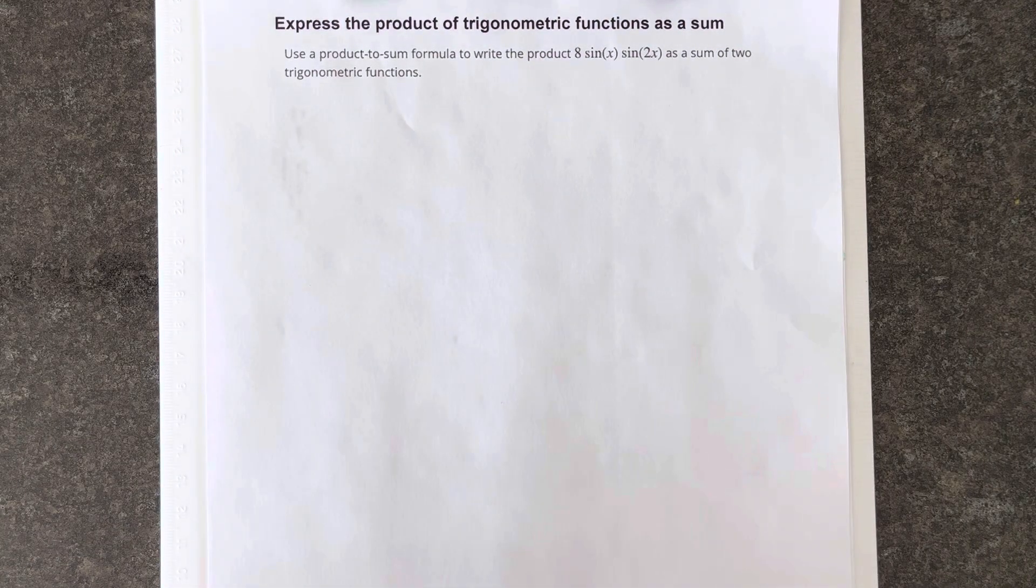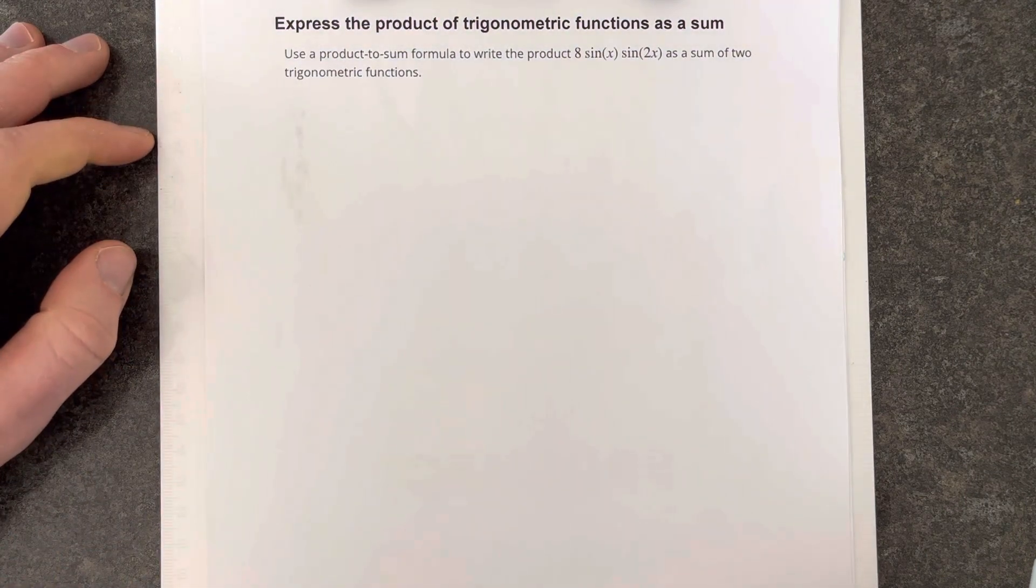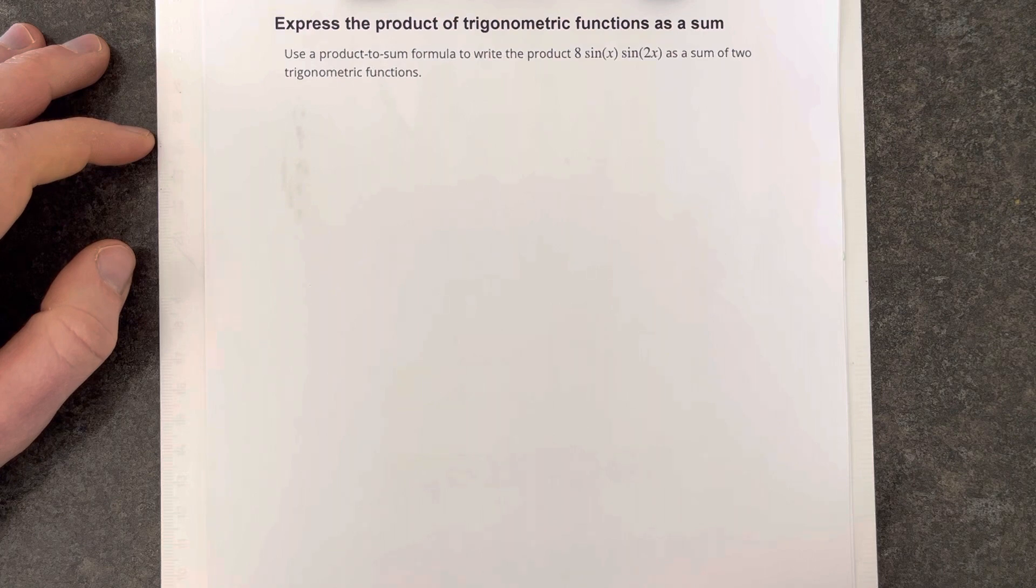In this video, we're going to express the product of trigonometric functions as a sum. It says, use a product-to-sum formula to write the product 8 sin x sin 2x as a sum of two trigonometric functions.